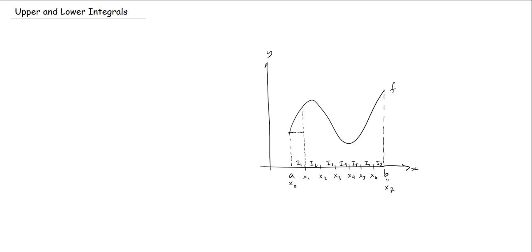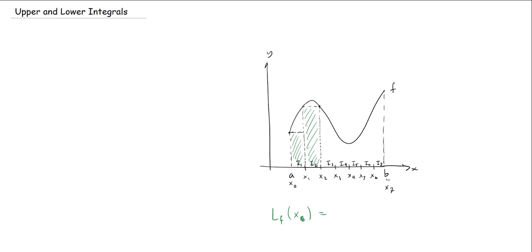The infimum of f on I₁ is over here, and I can compute the area of that rectangle. Then I go over to I₂, find the infimum there, and fill it in. I compute the length of each Iₖ times the infimum of f on that interval. If I go through and do this for the whole picture, I get what we call the lower sum L(f, X), which is the sum from k=1 to 7 of the infimum of f on Iₖ times the length of Iₖ.